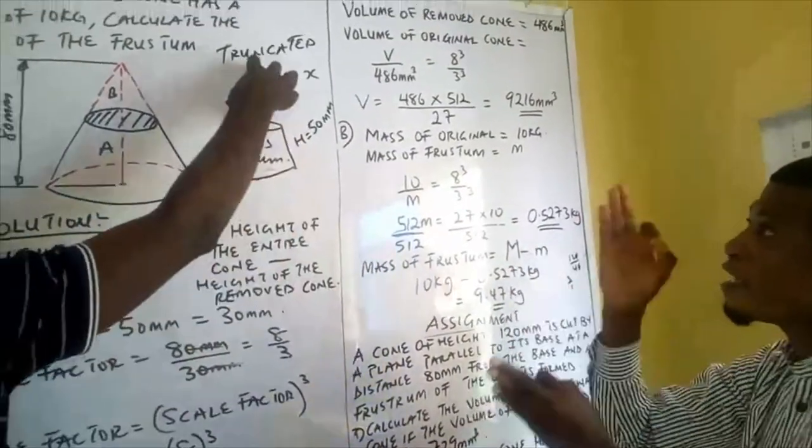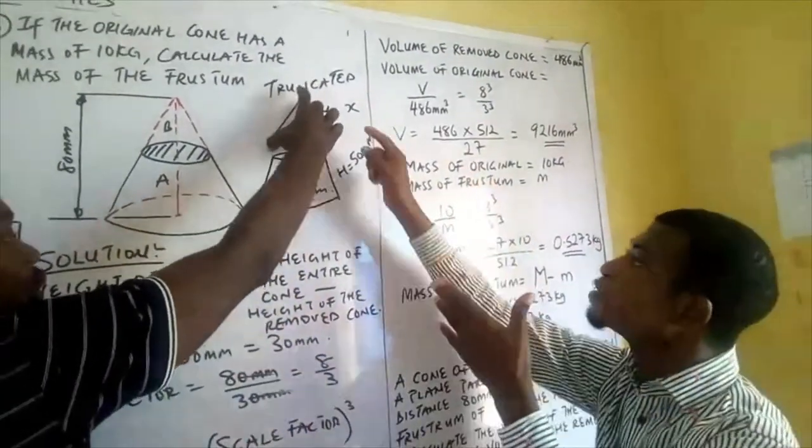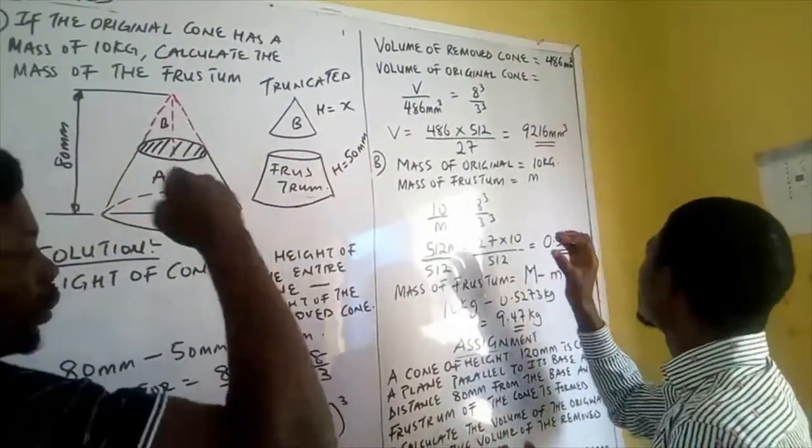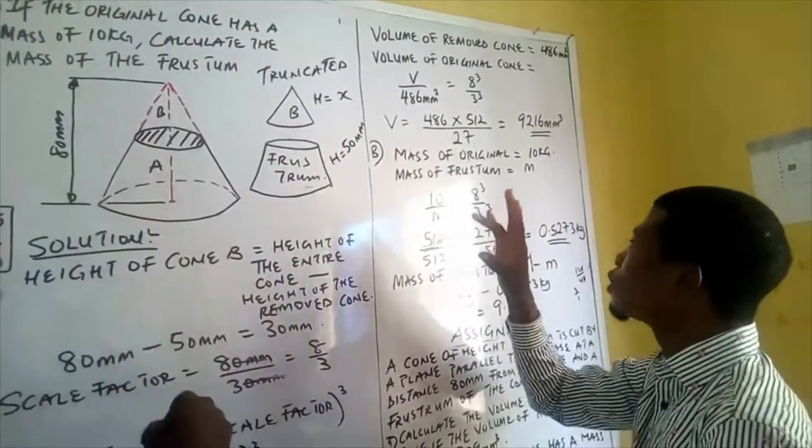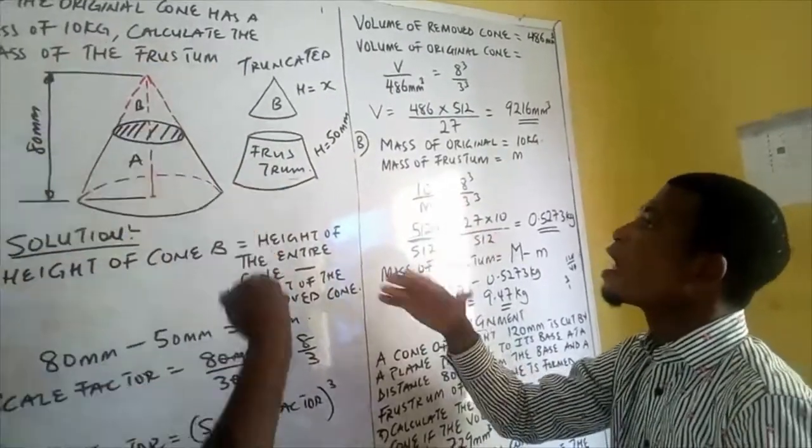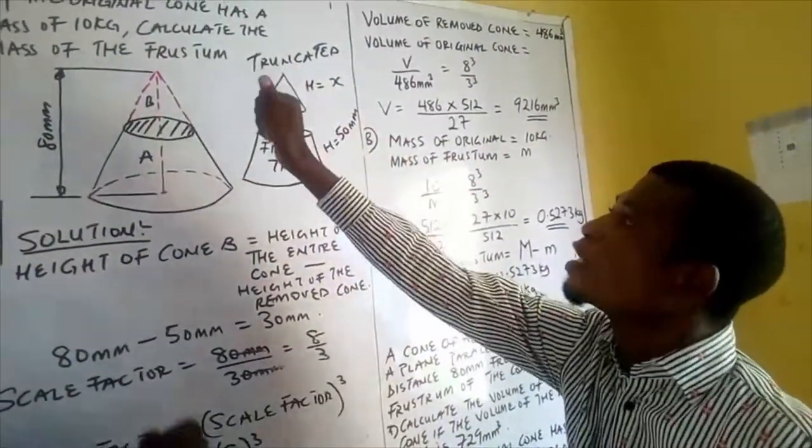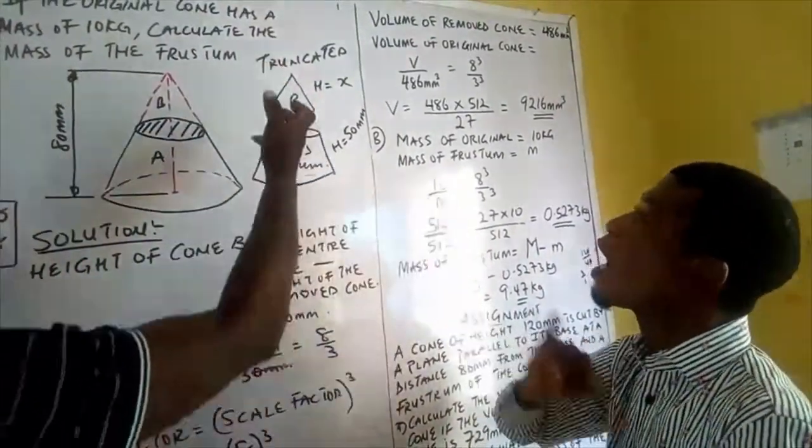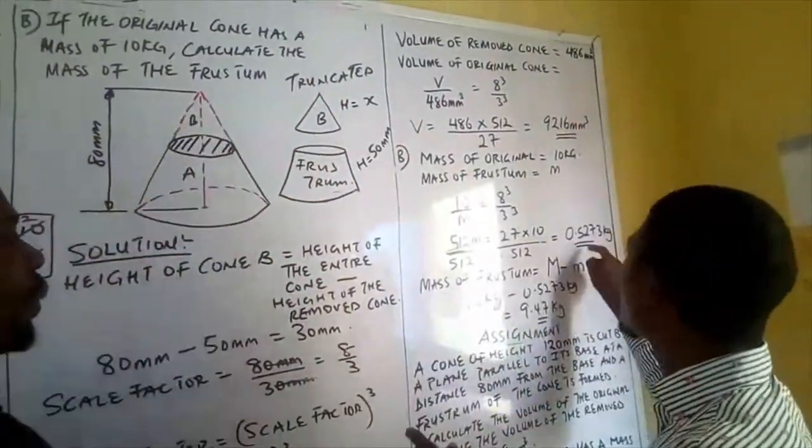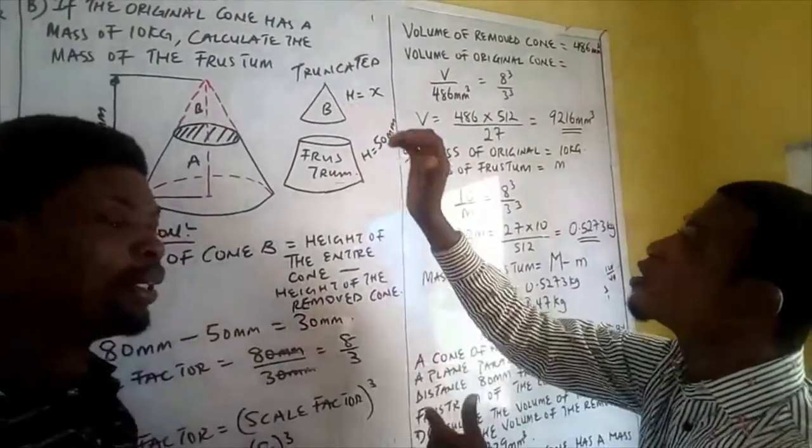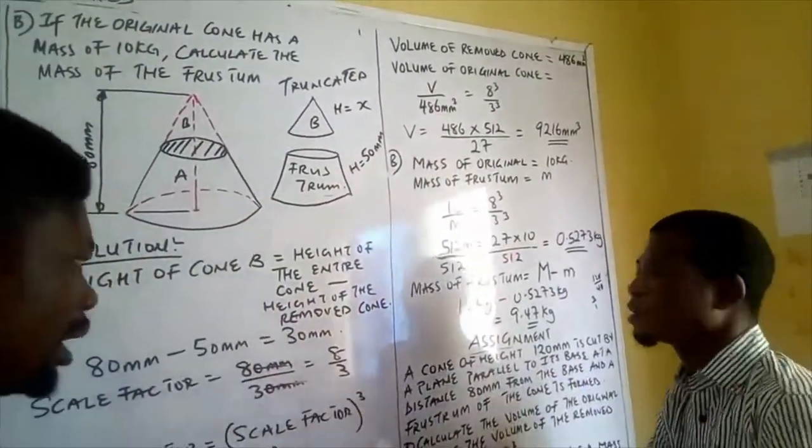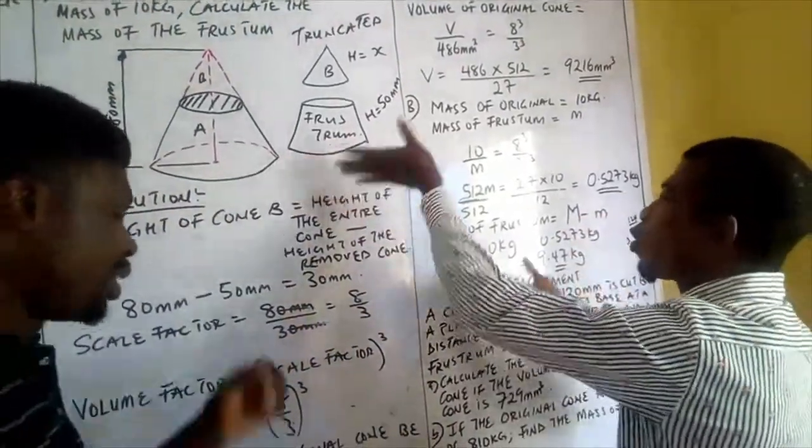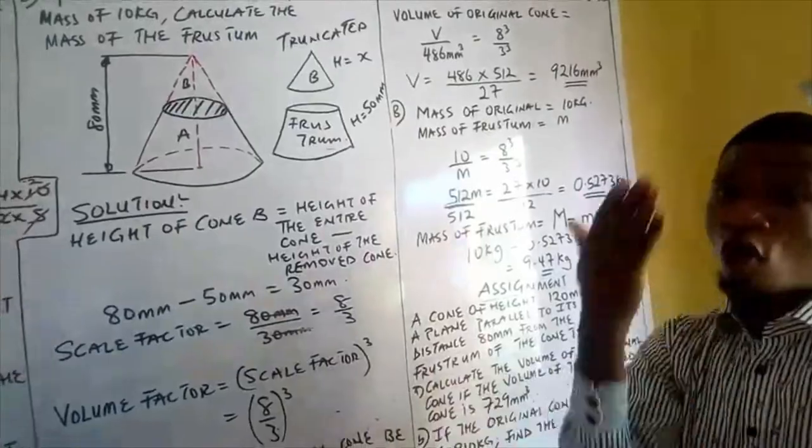If this part of the cone weighs 0.5273 kilogram and the entire cone itself is weighing 10 kilogram, it simply means that if I want to find the weight of the frustum, I subtract this one from the entire weight: 10 kilogram minus 0.5273 kilogram, which gives you approximately 9.47 kilogram.